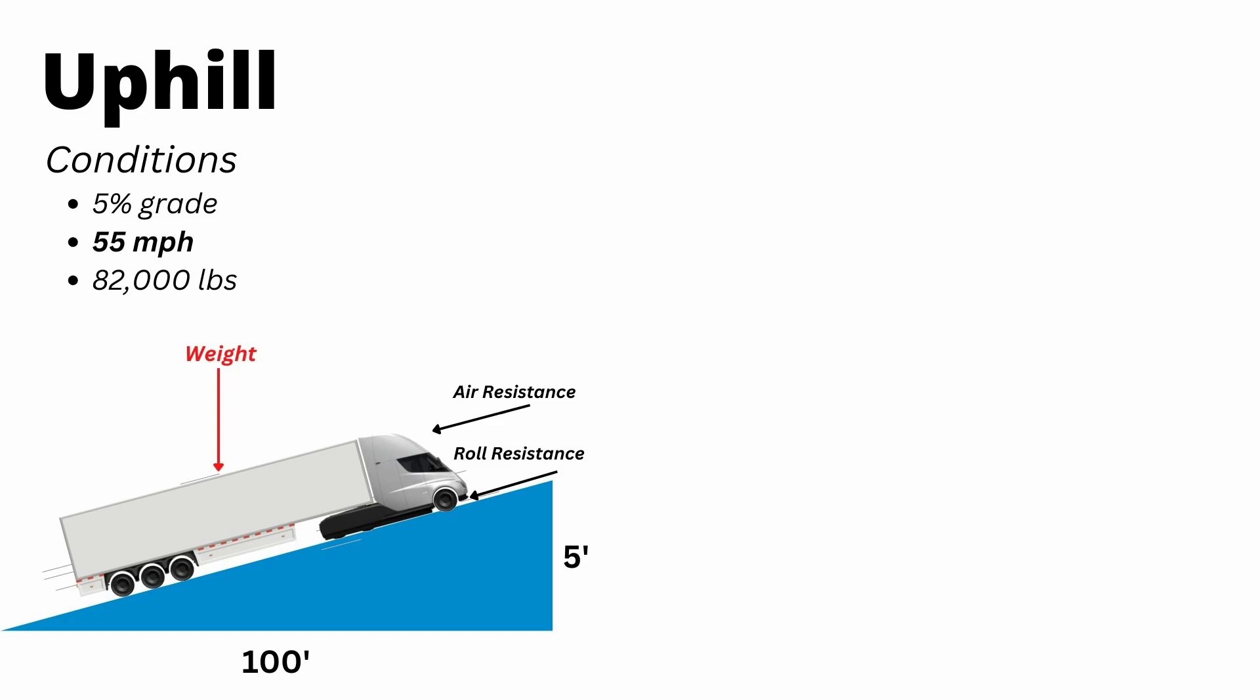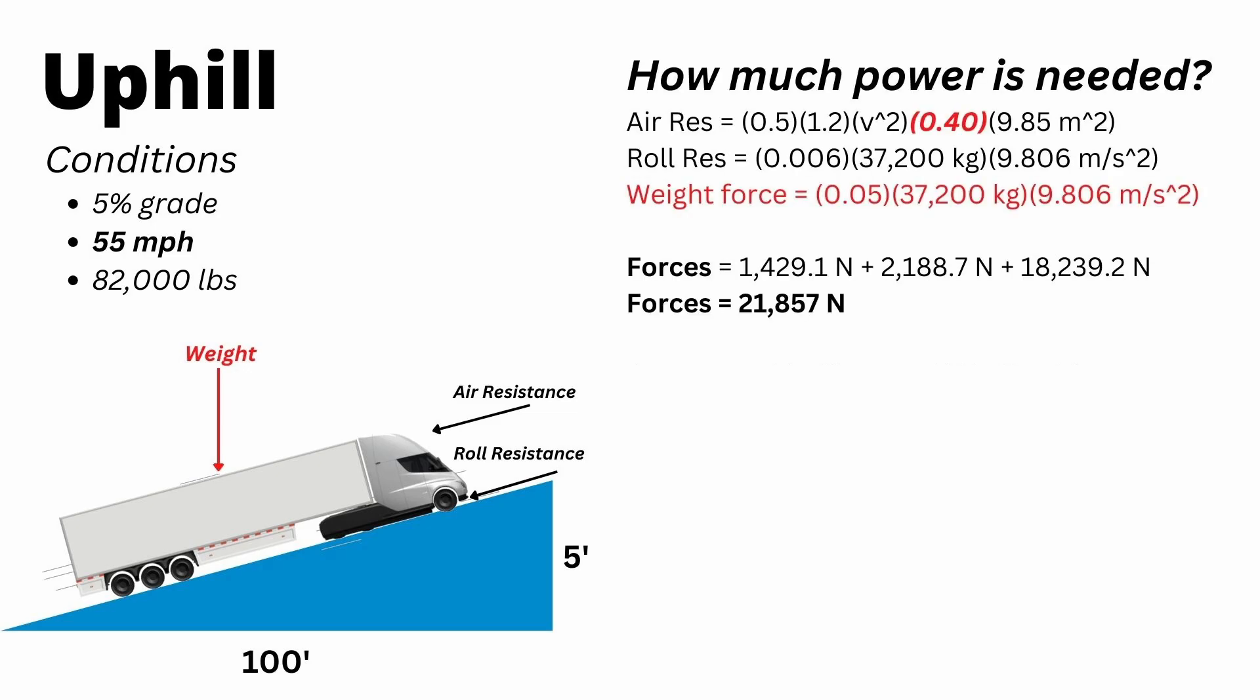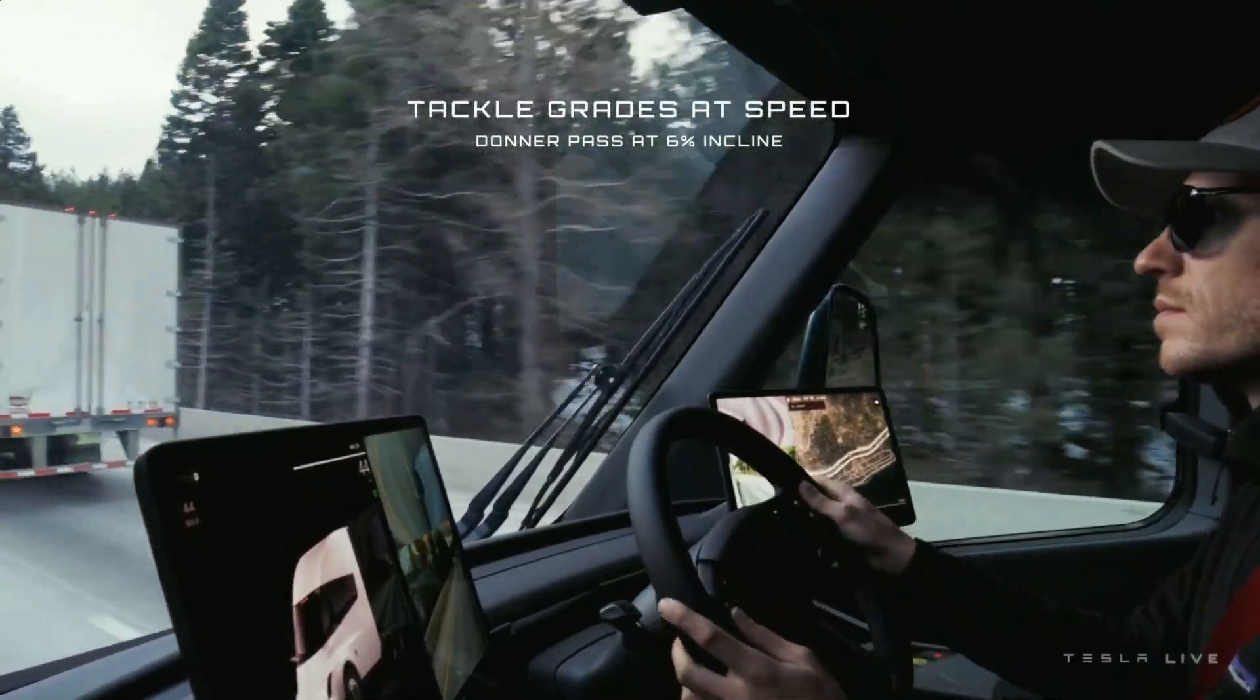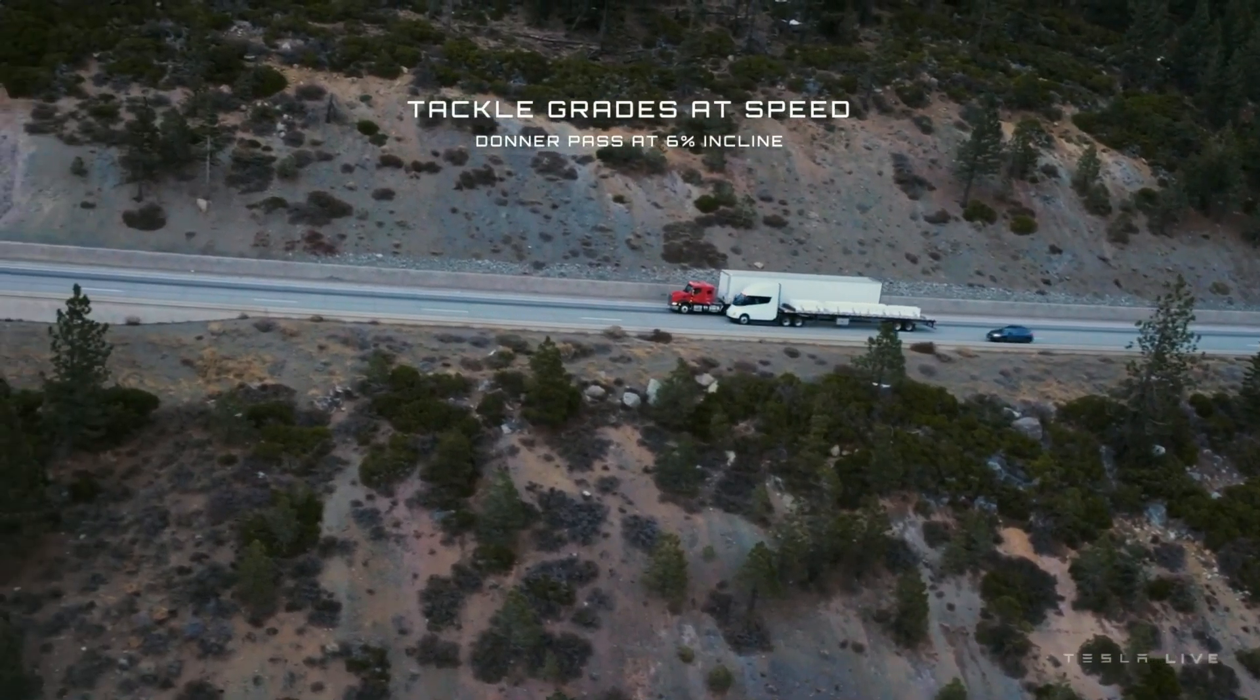So all the conditions are the same now, except we're going 55 miles an hour up this grade. You can see our total forces come out to 21,857 newtons. We're going to multiply by our velocity to get power. And we see that power to maintain this 55 miles an hour is 537 kilowatts. Accounting for 90% efficiency, that becomes just under 600 kilowatts, which is equivalent to 800 horsepower. So at 55 miles an hour, up a 5% grade, weighing 82,000 pounds, this Tesla semi is still not even close to the limit of its power.